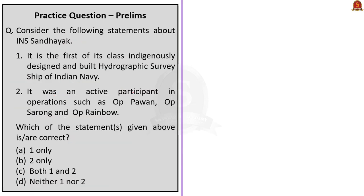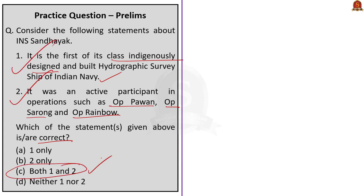Second question: Consider the following statements about INS Sandhyak. Statement 1: It is the first of its class, indigenously designed and built hydrographic survey ship of the Indian Navy. Statement 2: It was an active participant in operations such as Operation Pawan, Operation Sarang and Operation Rainbow. Which of the statements given above are correct? Option A: 1 only. Option B: 2 only. Option C: Both 1 and 2. Option D: Neither 1 nor 2. Based on our article discussion, both statements are correct — the right answer is Option C, both 1 and 2.